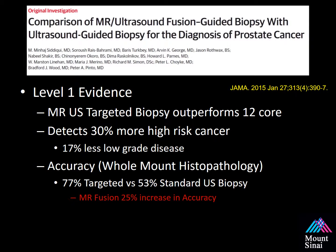A recent publication from the NIH group in JAMA reported level 1 evidence that MR-ultrasound targeted biopsy outperforms standard 12-core biopsy. It finds 30% more high-risk cancer and 17% less low-grade disease, which is part of the problem with prostate cancer of over-diagnosis and over-treatment. Typically at 12-core biopsy, 70% of patients diagnosed have low-grade disease. They correlated these findings with whole-mount histopathology after radical prostatectomy, finding an accuracy of 77% with targeted biopsy compared to 53% with standard biopsy.